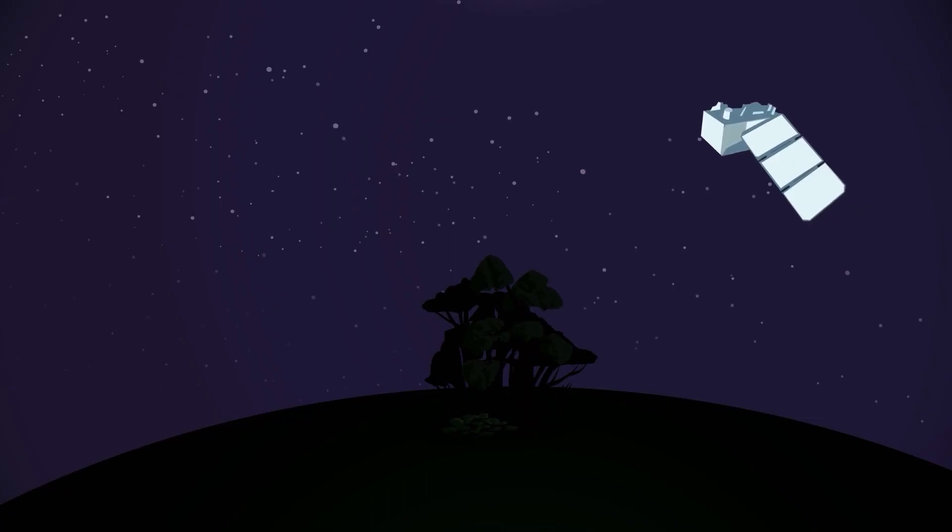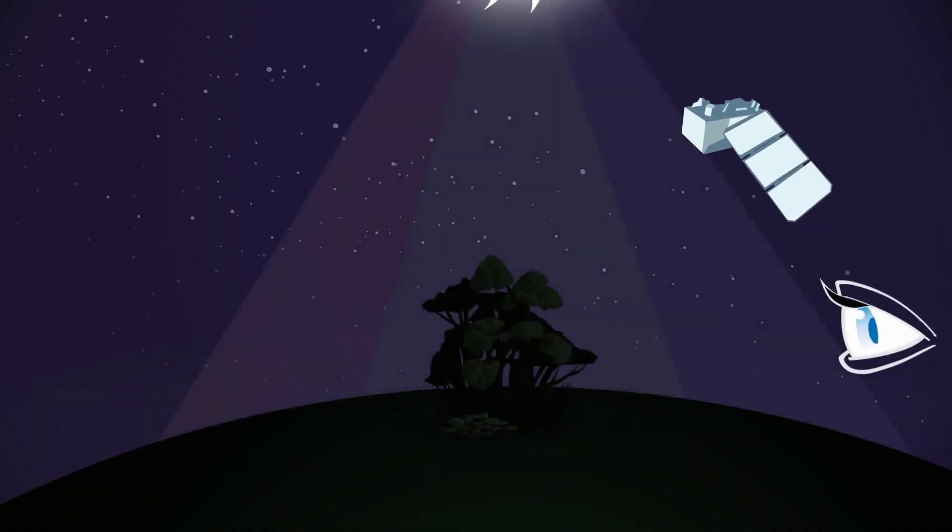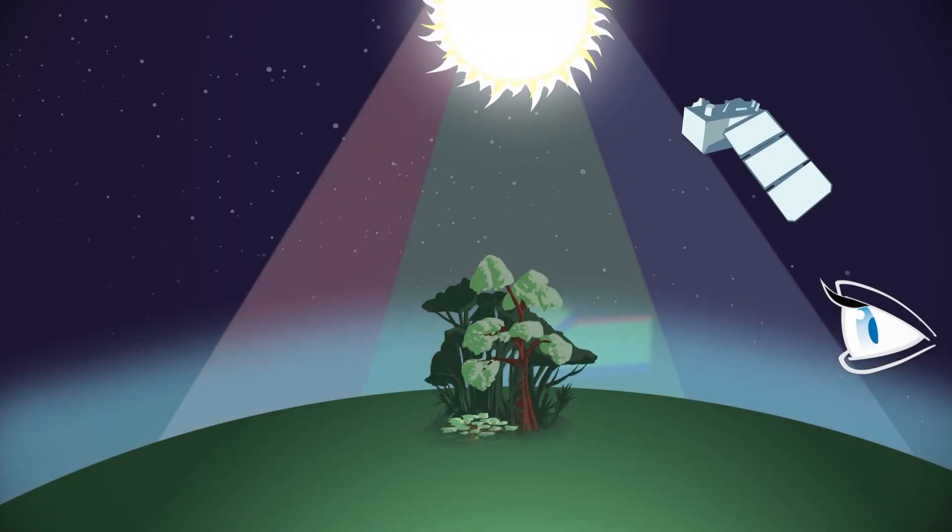The function of multispectral sensors can be compared to that of a human eye. The sensor measures, just like the retina of the eye, the intensity of reflected light in different wavelengths.